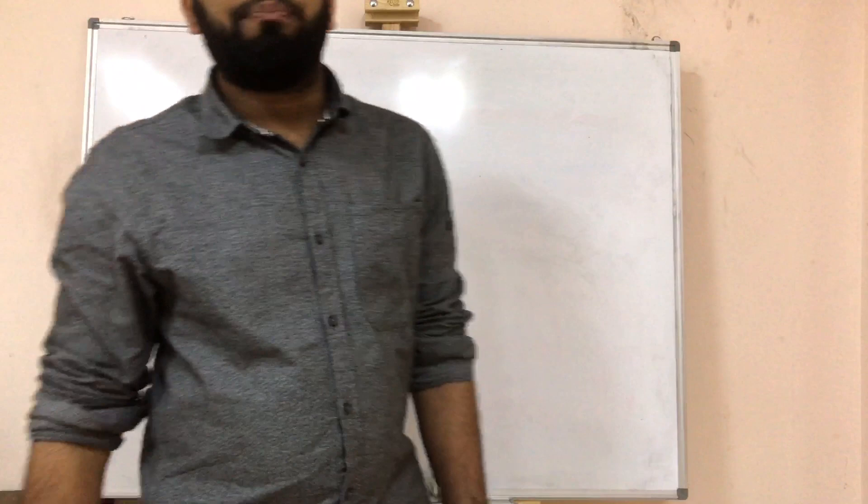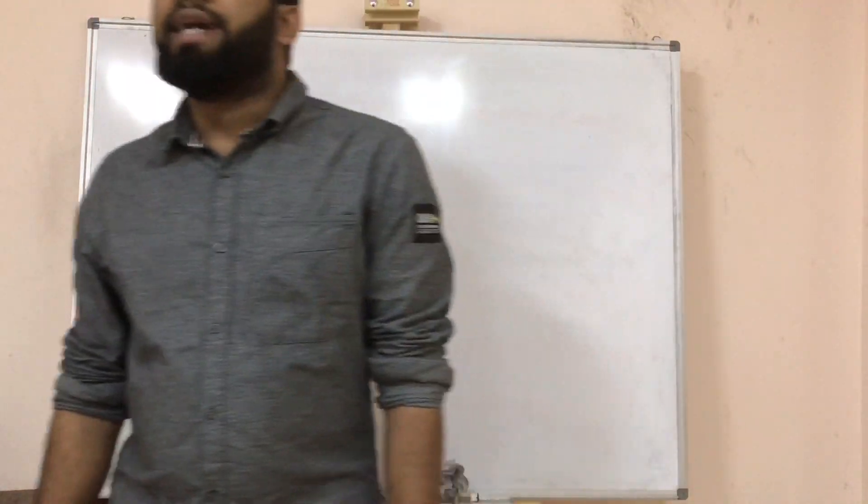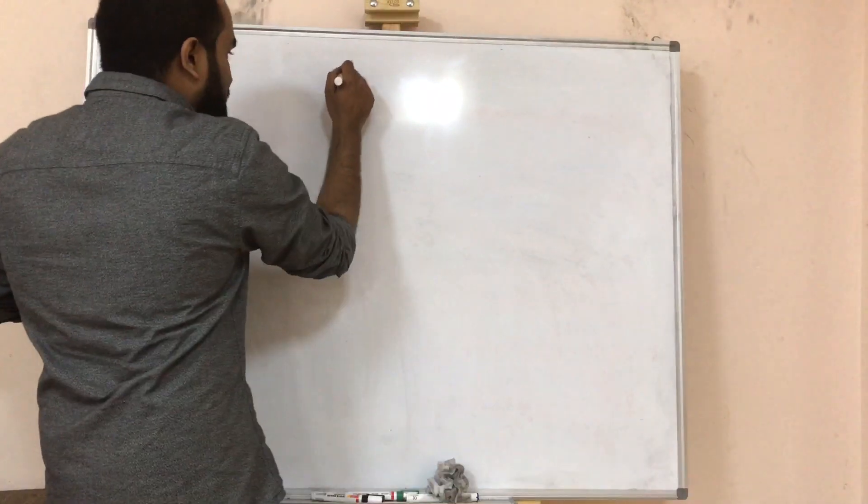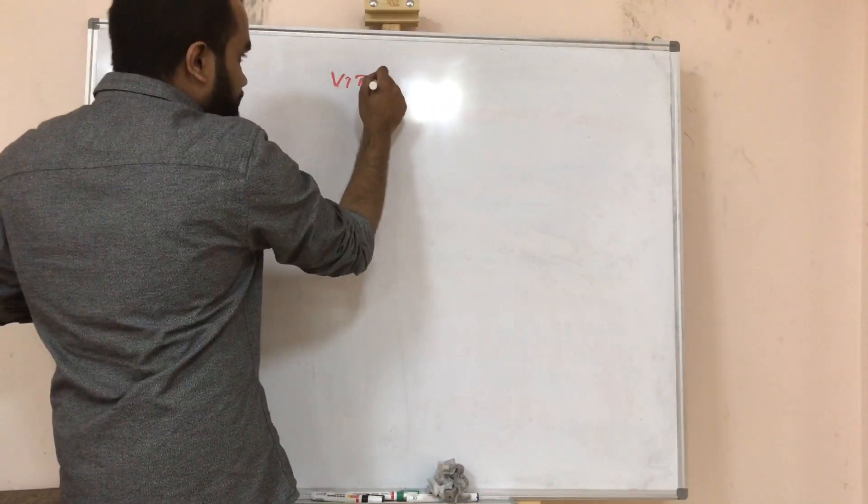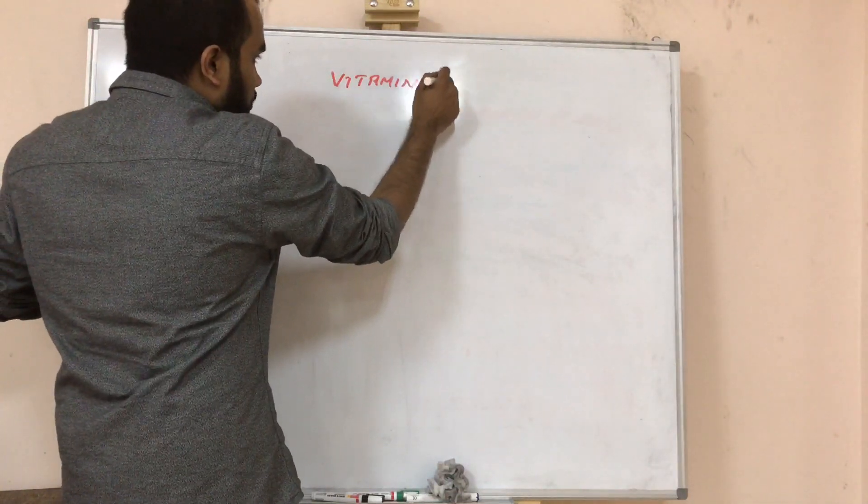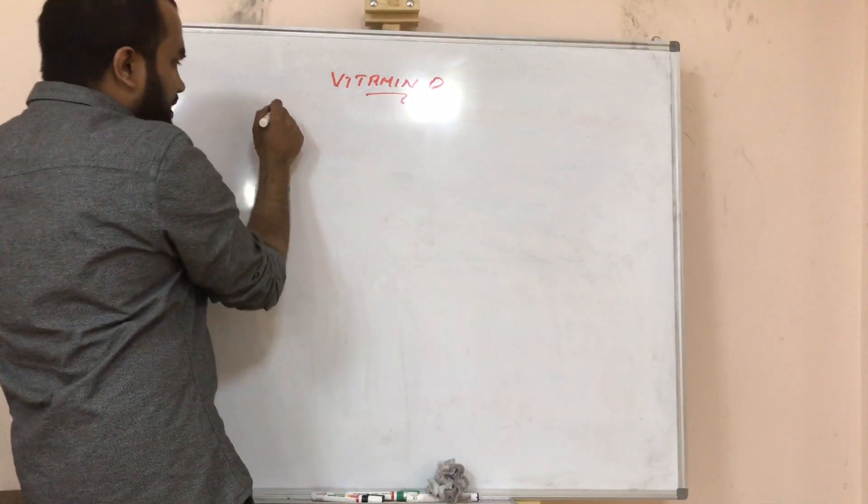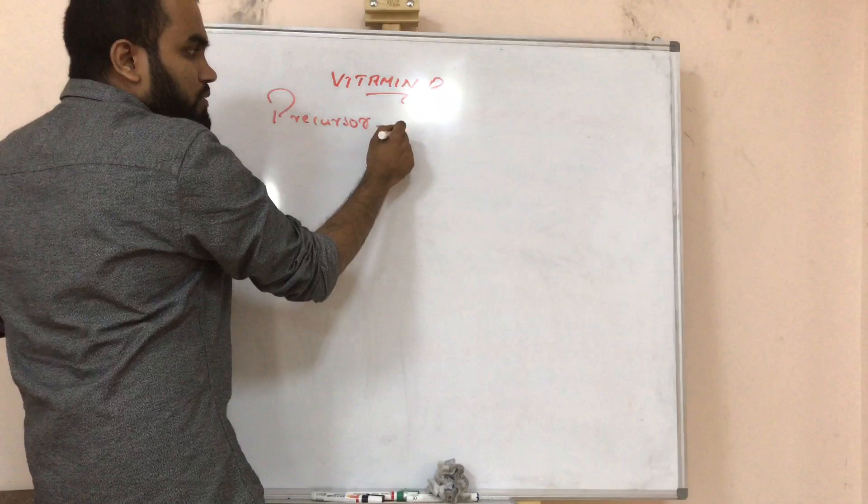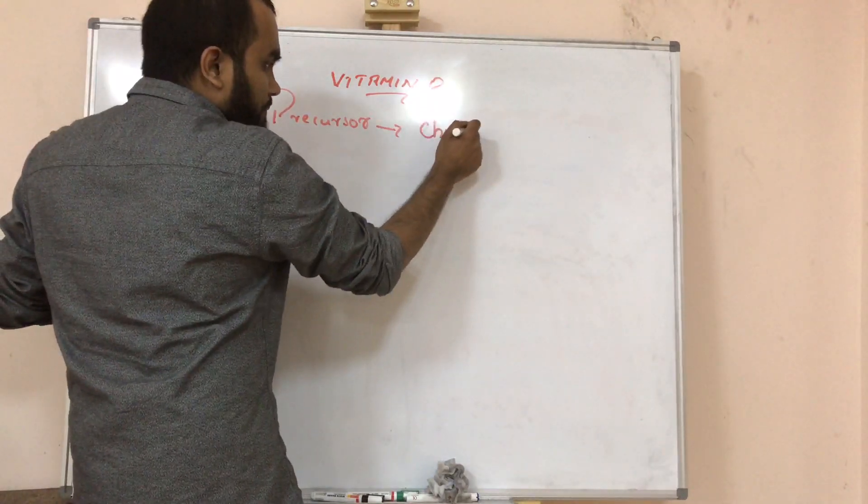Here's the next lipid soluble vitamin, Vitamin D. We finished Vitamin A, so next we're going to study Vitamin D. First of all, what is the precursor of vitamin D? Where does vitamin D come from? It comes from cholesterol.